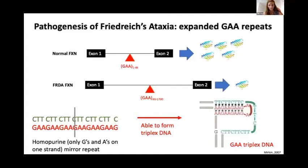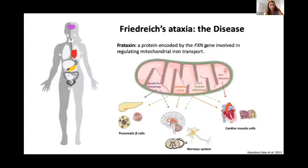So, frataxin, which is the protein that's affected by these repeats, is a protein involved in regulating mitochondrial iron transport. If you can remember from biology, mitochondria is the powerhouse of the cell. So, it's really important to be regulating iron properly here. And if you aren't regulating iron properly, you can get iron deposits, which happens in cardiac muscle in this disease. You can get oxidative stress, which basically can cause damage to your protein and DNA. And you can also get cell death.